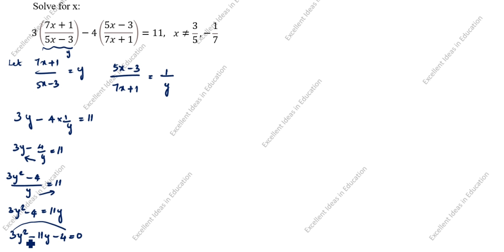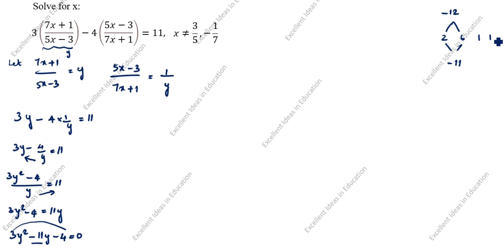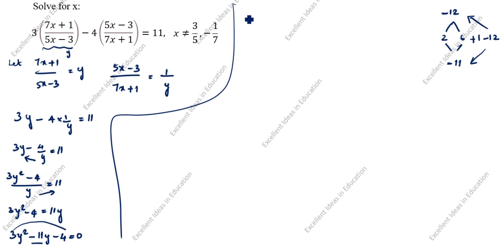To factor 3y² - 11y - 4, we multiply 3 by -4 to get -12. We need two numbers that multiply to -12 and add to -11. Taking -12 and +1: -12 + 1 = -11 and -12 × 1 = -12. So we rewrite as 3y² + y - 12y - 4.